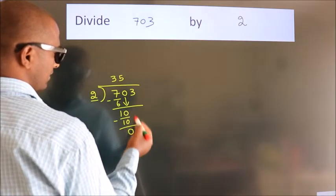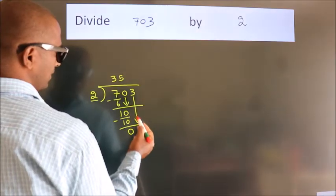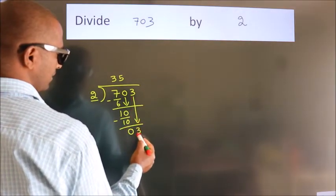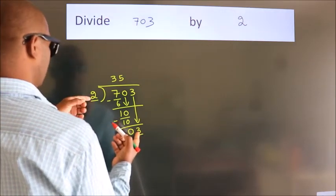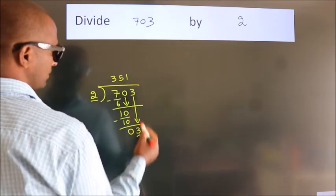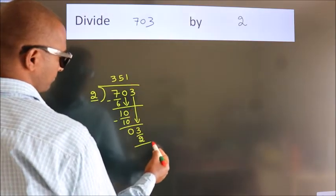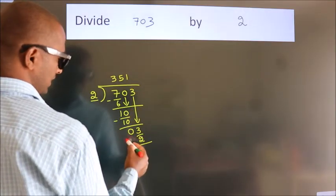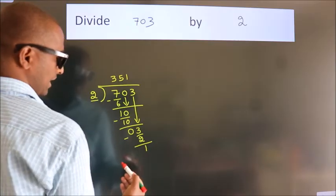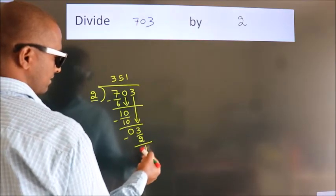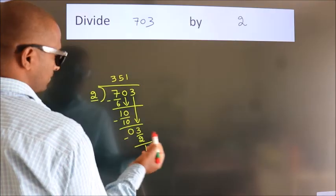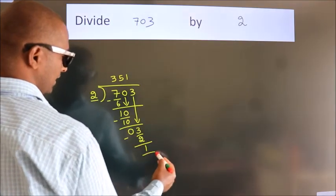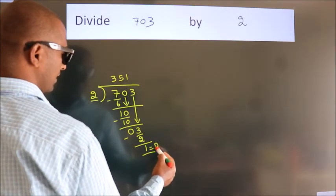After this, bring down the beside number. So 3 comes down, giving us 3. A number close to 3 in the 2 times table is 2 ones, which is 2. Now we subtract. We get 1. After this, there are no more numbers to bring down, so we stop here.